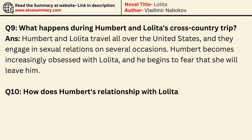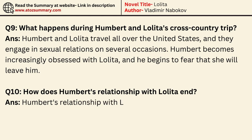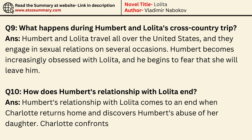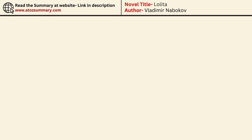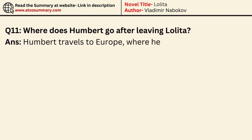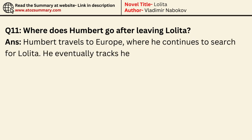How does Humbert's relationship with Lolita end? Humbert's relationship with Lolita comes to an end when Charlotte returns home and discovers Humbert's abuse of her daughter. Charlotte confronts Humbert, and he is forced to flee. Where does Humbert go after leaving Lolita? Humbert travels to Europe, where he continues to search for Lolita, eventually tracking her down in Ramsdale, England.